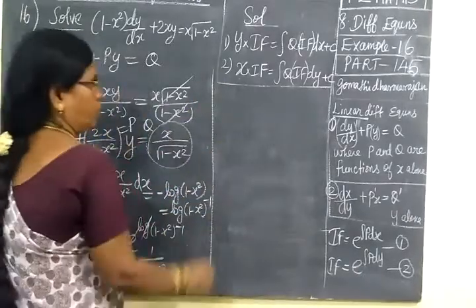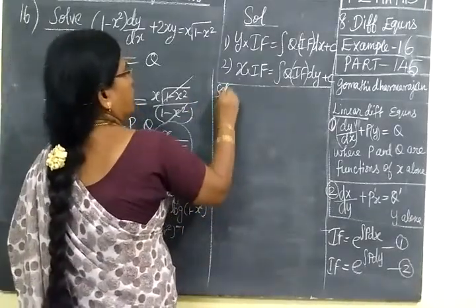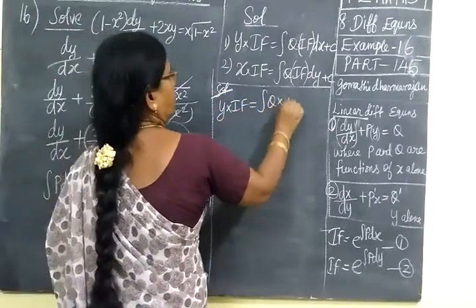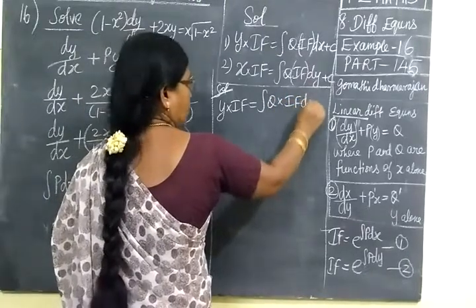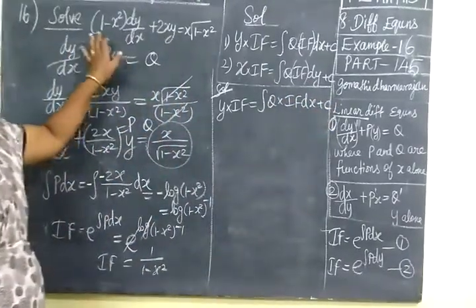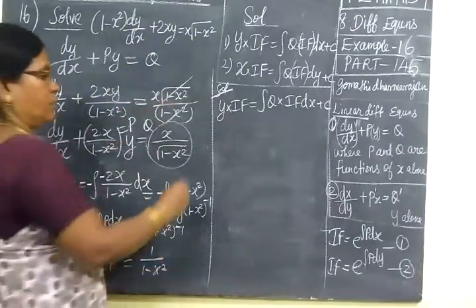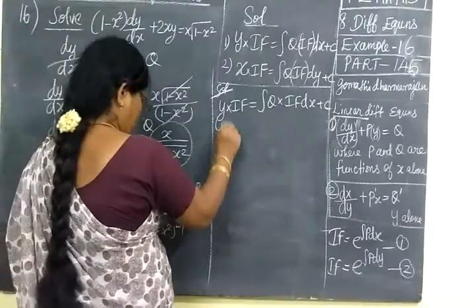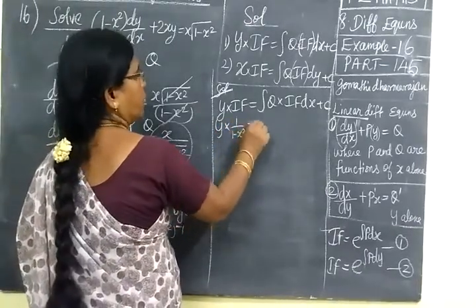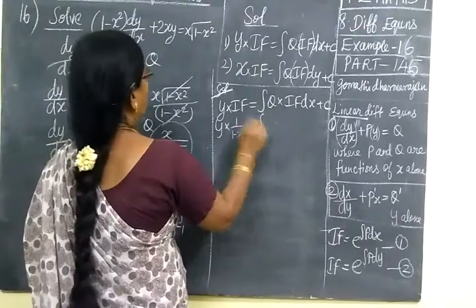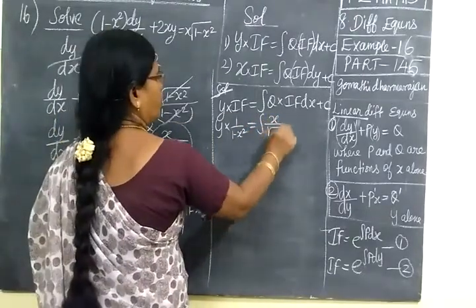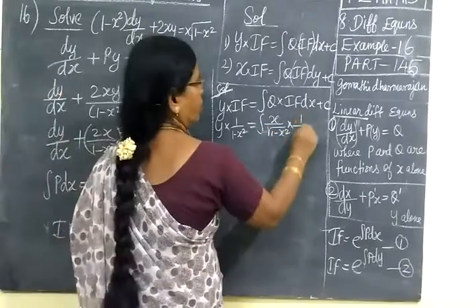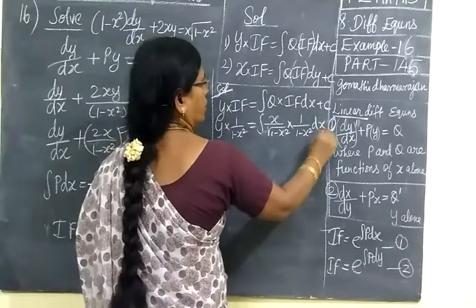So now we write the solution. The solution is y times IF equals integral of Q times IF dx plus c. Since P and Q are functions of x, we write dx. So y times 1 by 1 minus x squared equals the integral of x by root of 1 minus x squared, times 1 by 1 minus x squared dx, plus c.